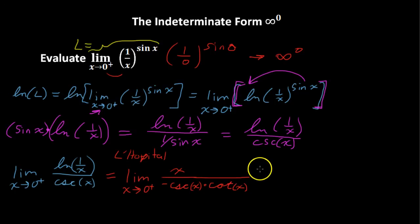So what L'Hopital's rule lets us do is take an indeterminate form like 0 over 0 or infinity over infinity and take the first derivative of the numerator and the first derivative of the denominator. So that's what I have in red here. The first derivative of the natural log of 1 over x is just x. That's 1 over 1 over x and that's just x. And the first derivative of cosecant of x is negative cosecant of x times the cotangent of x.